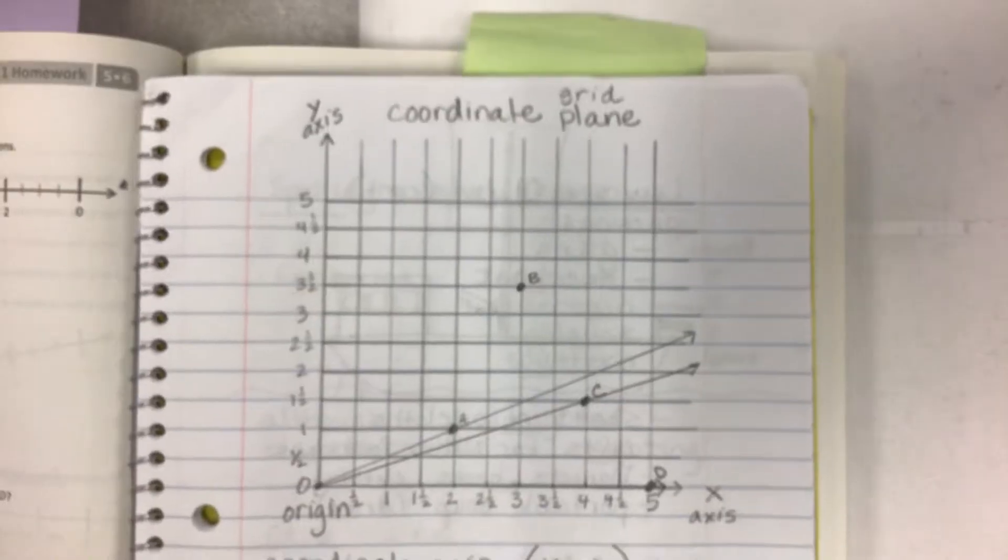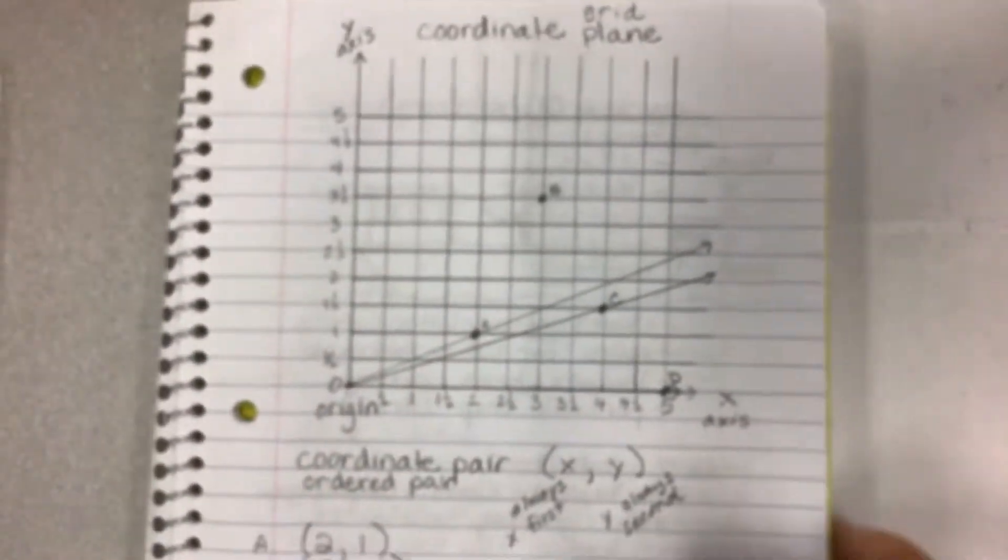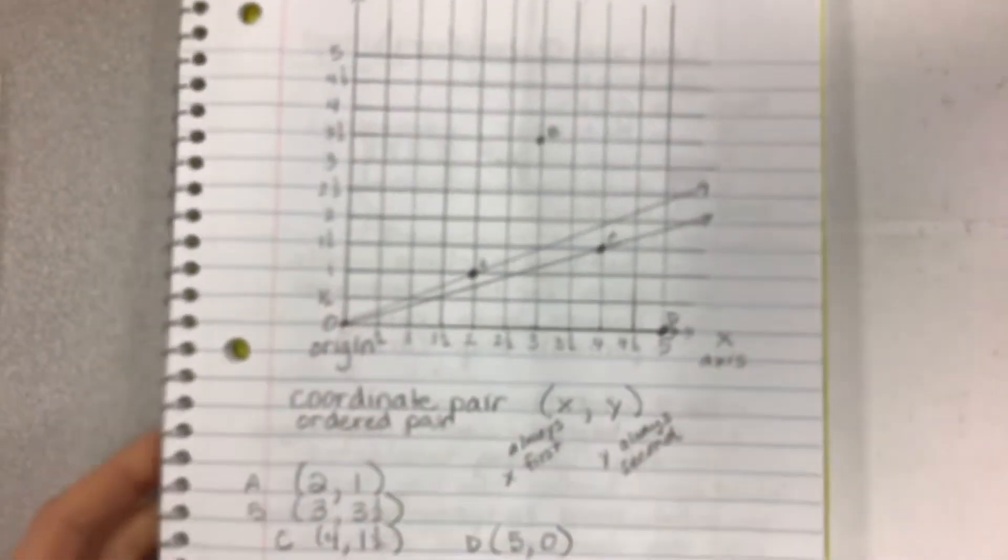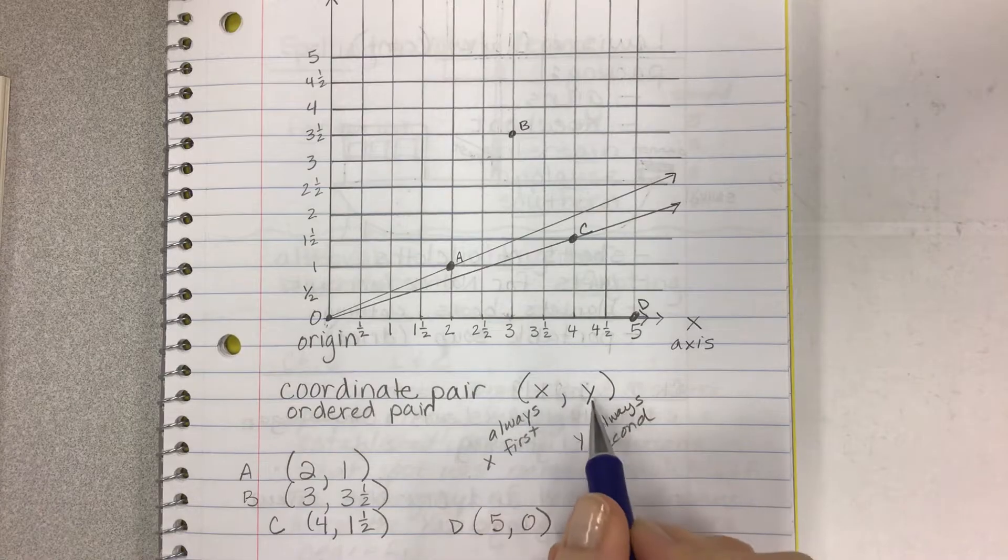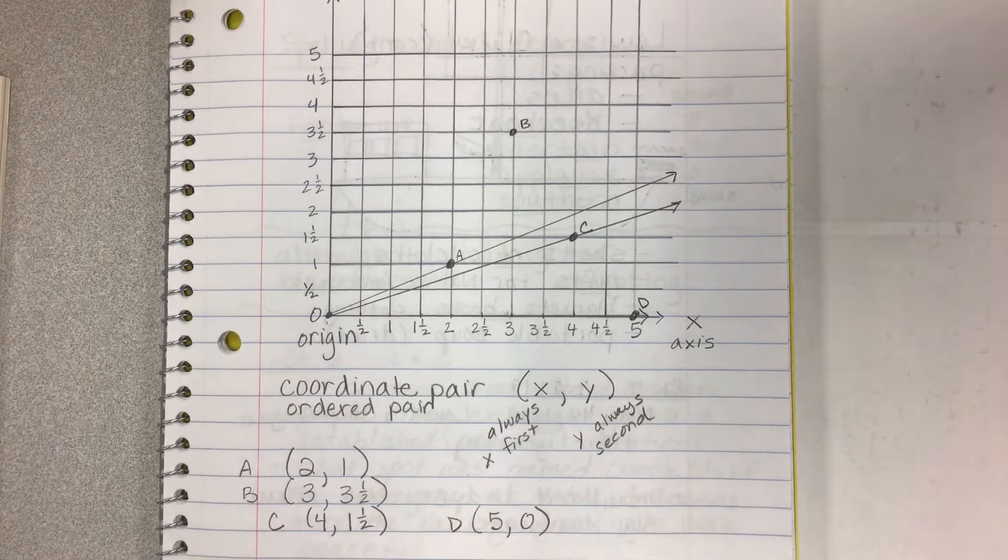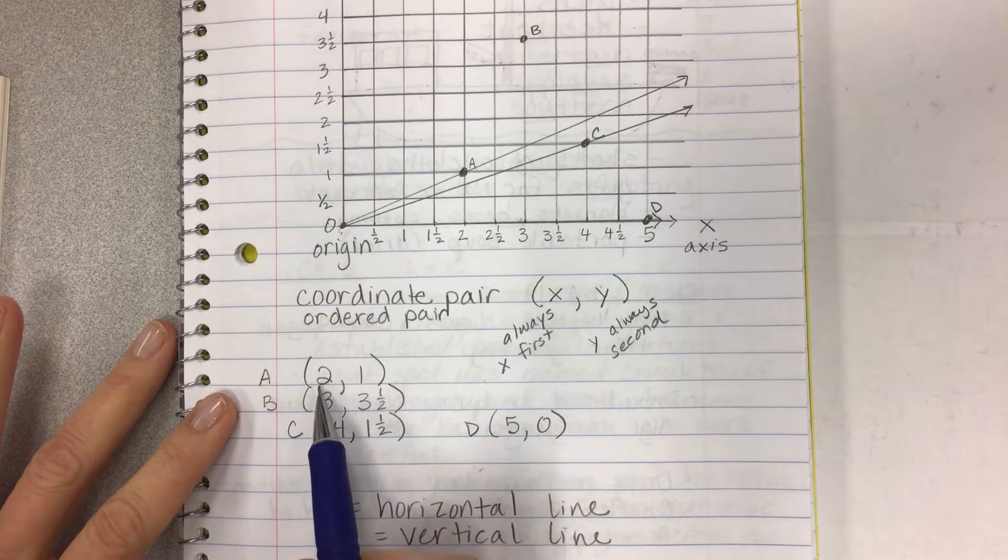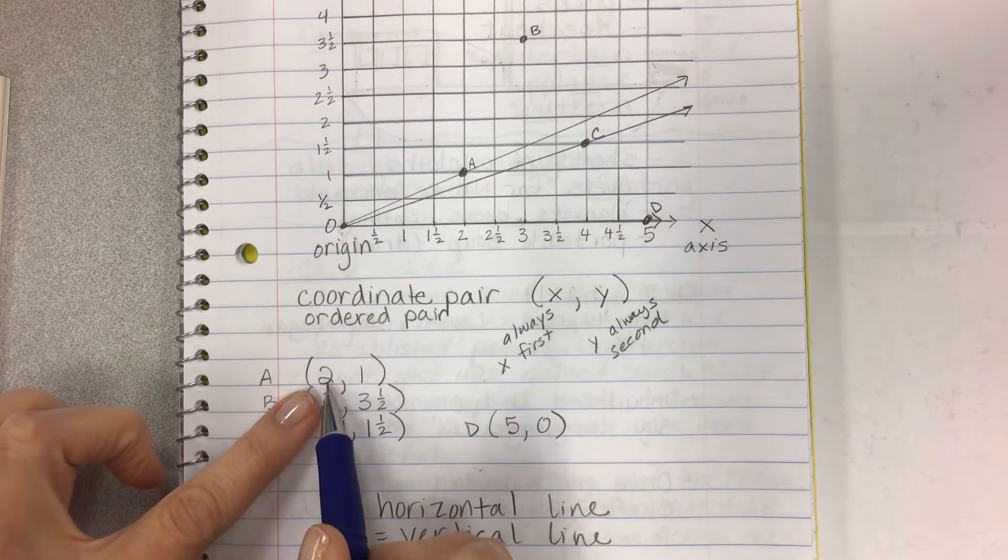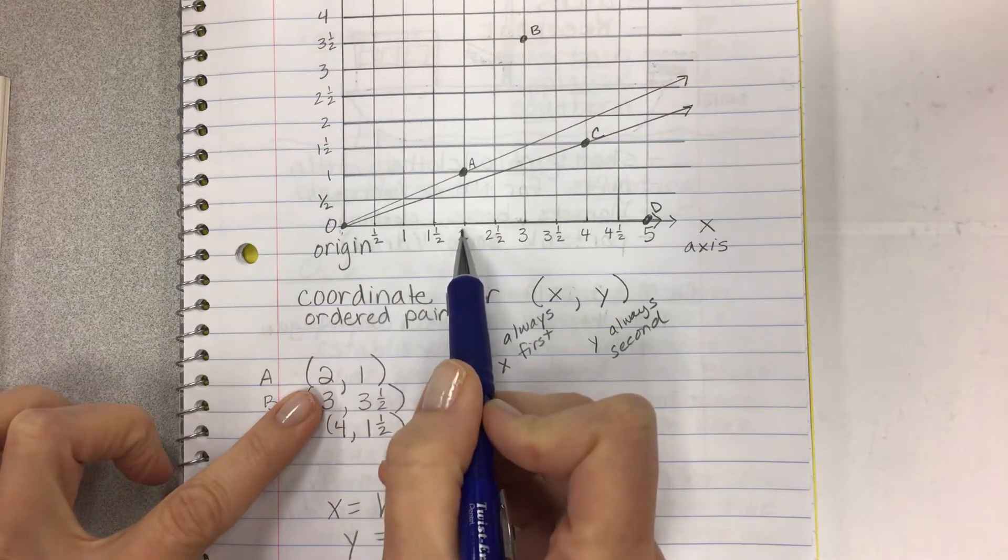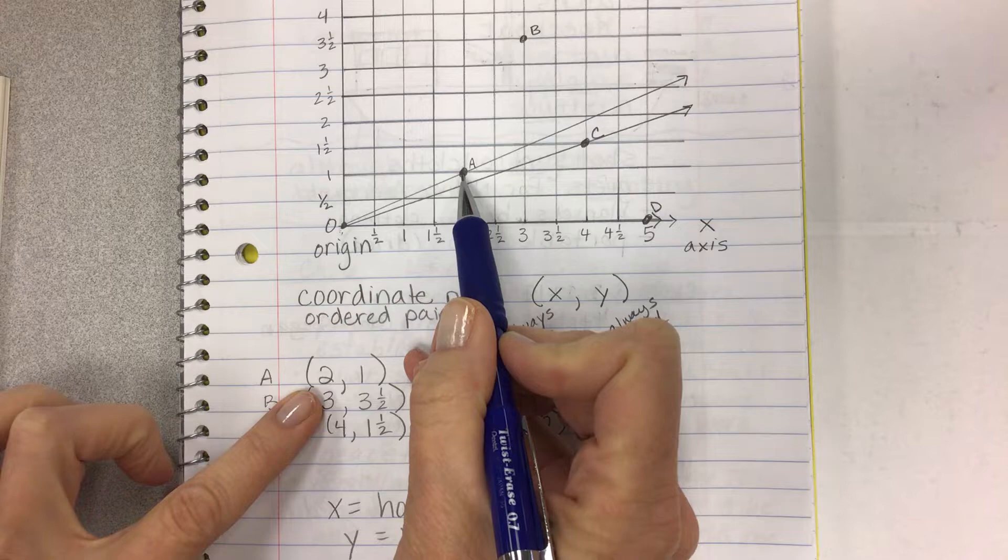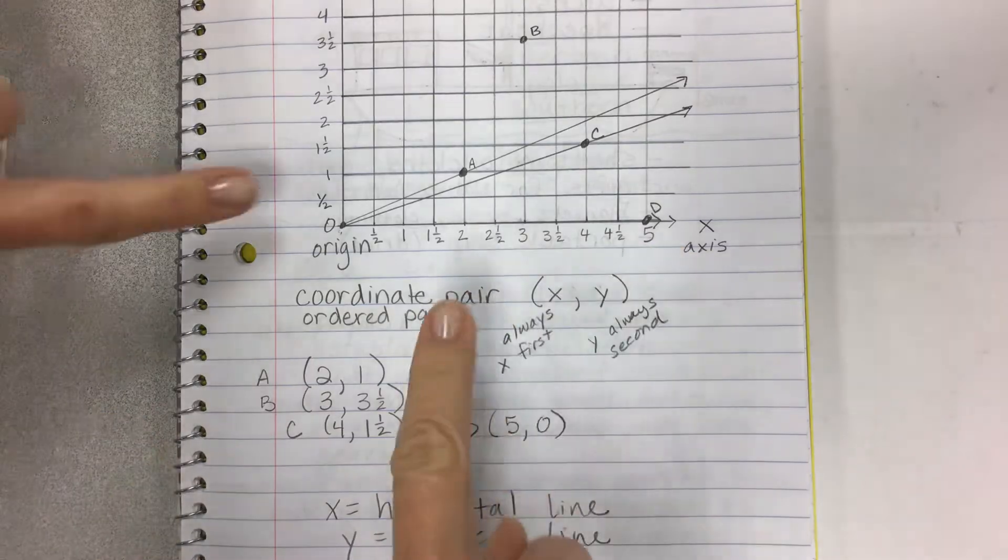And then here is a fancy coordinate grid or plane. And so then the ordered pair or coordinate pair is going to be given right here where we've got the x, always x first and then y always second. And so this is what a coordinate pair or ordered pair will look like. It's going to have your x value and y value. And what it means here is that they're going to tell you x value is, say, 2. So then you have to go find where the 2 is. And then the y value is 1. So you have to go find where the 1 is.